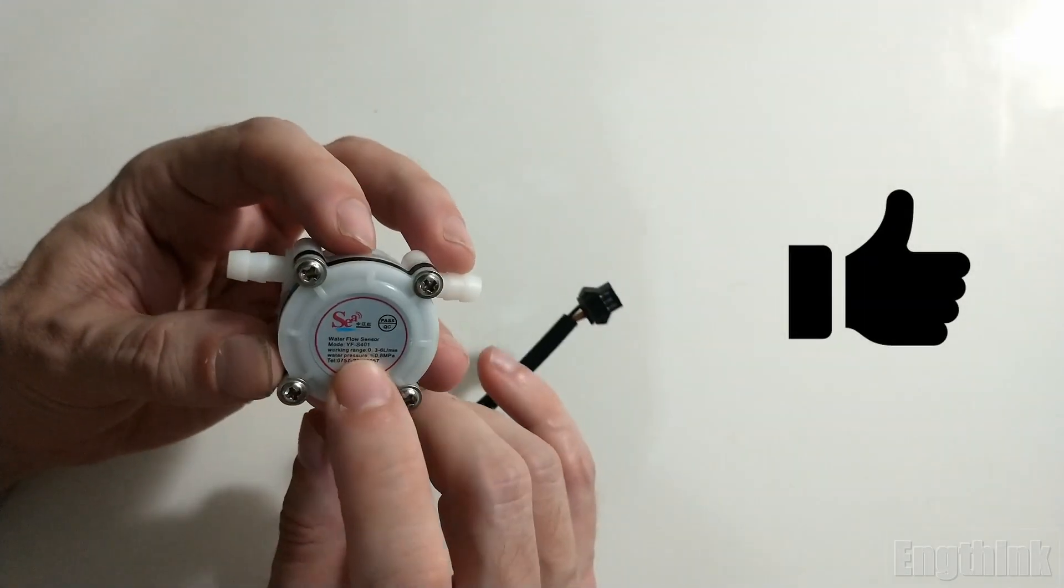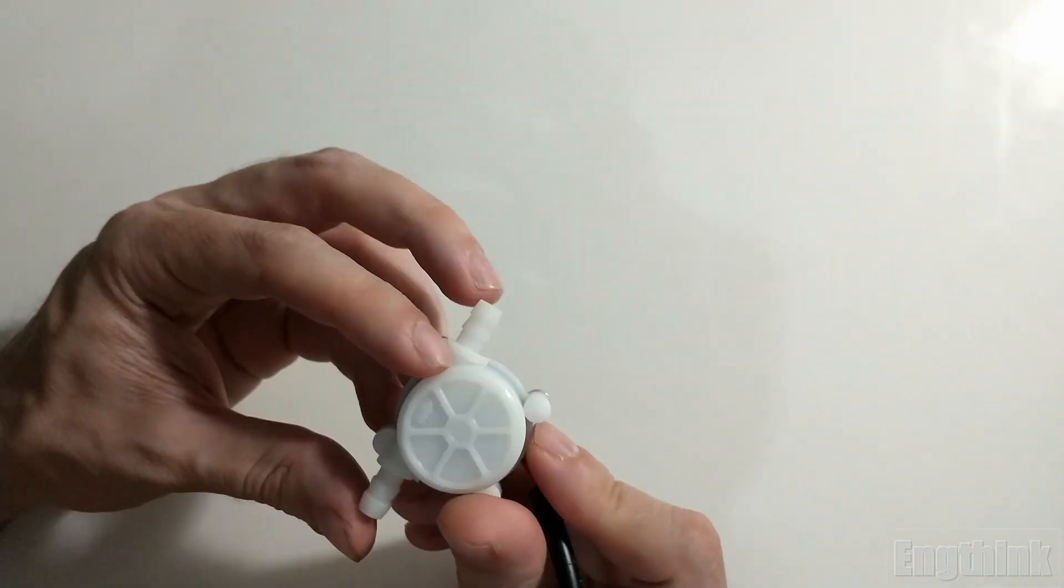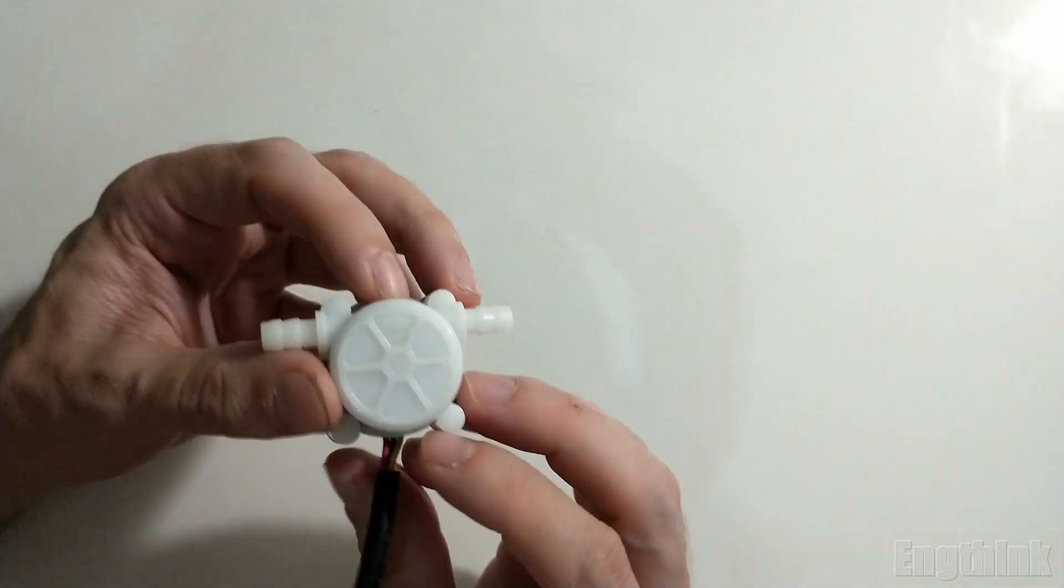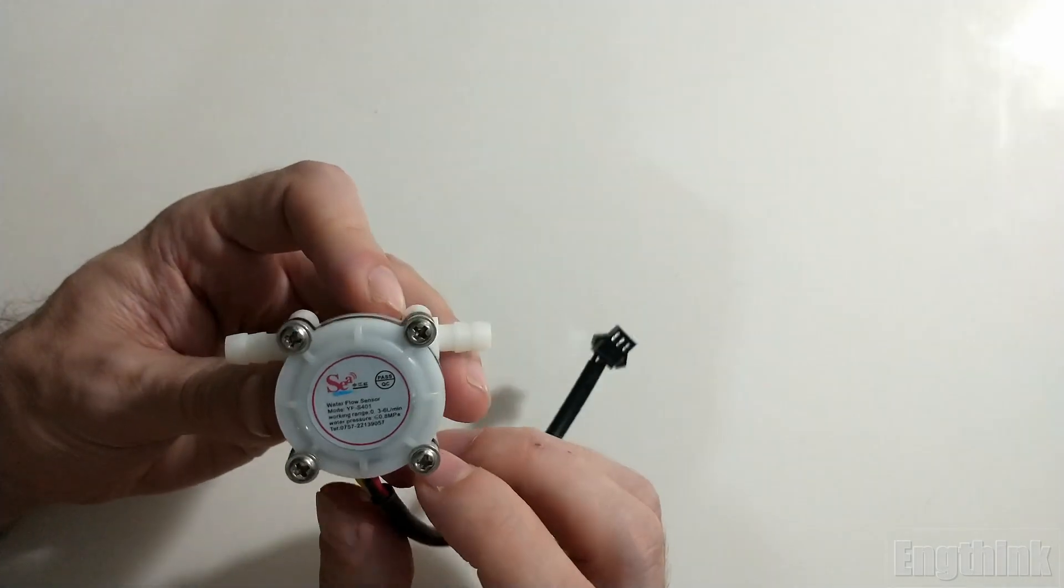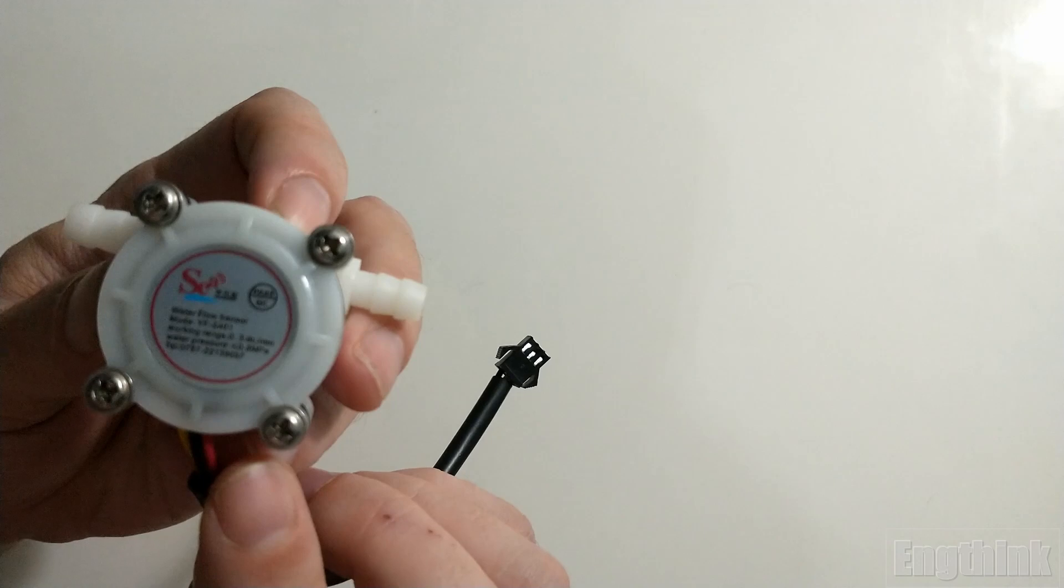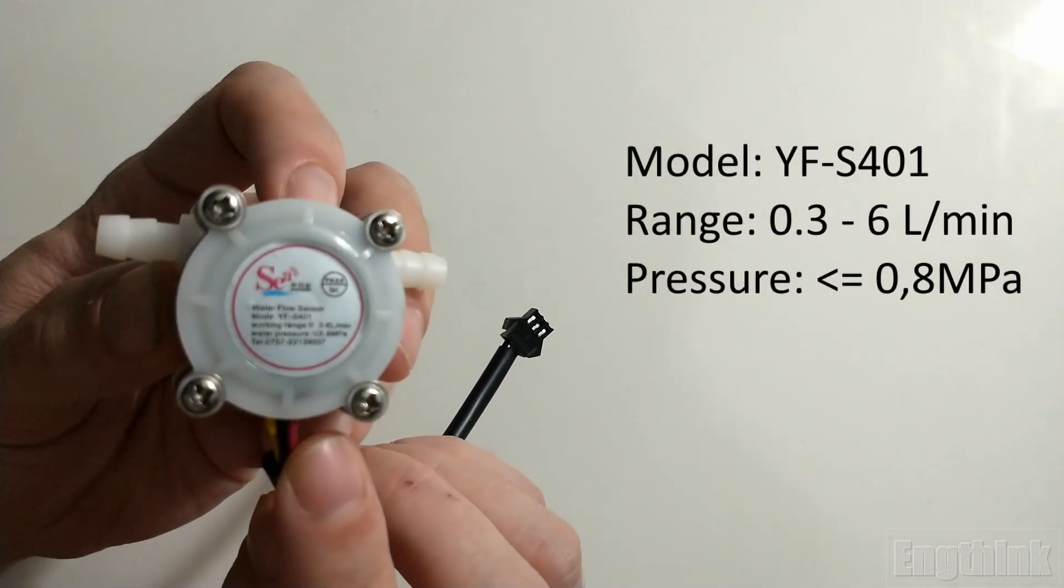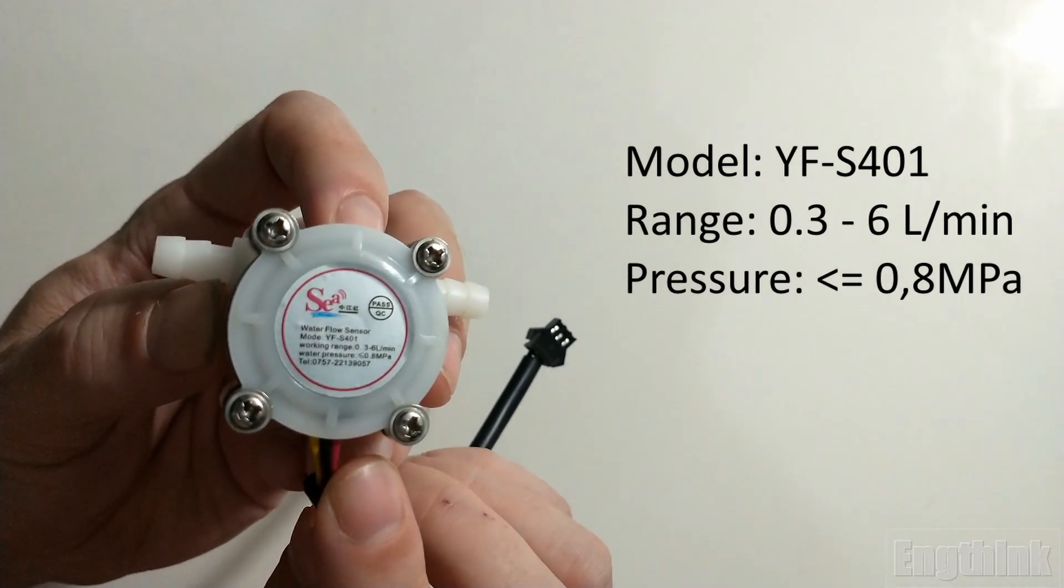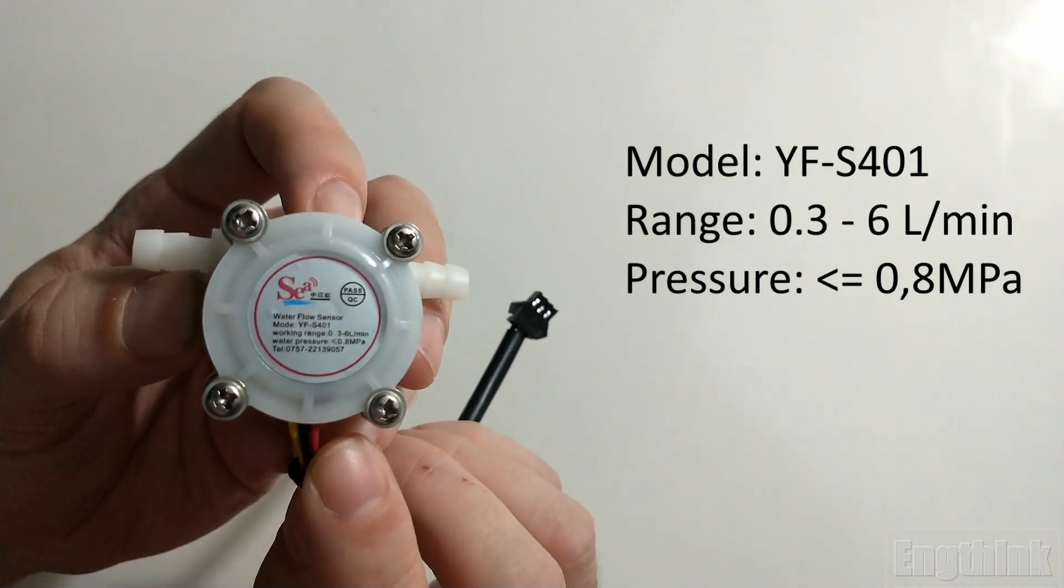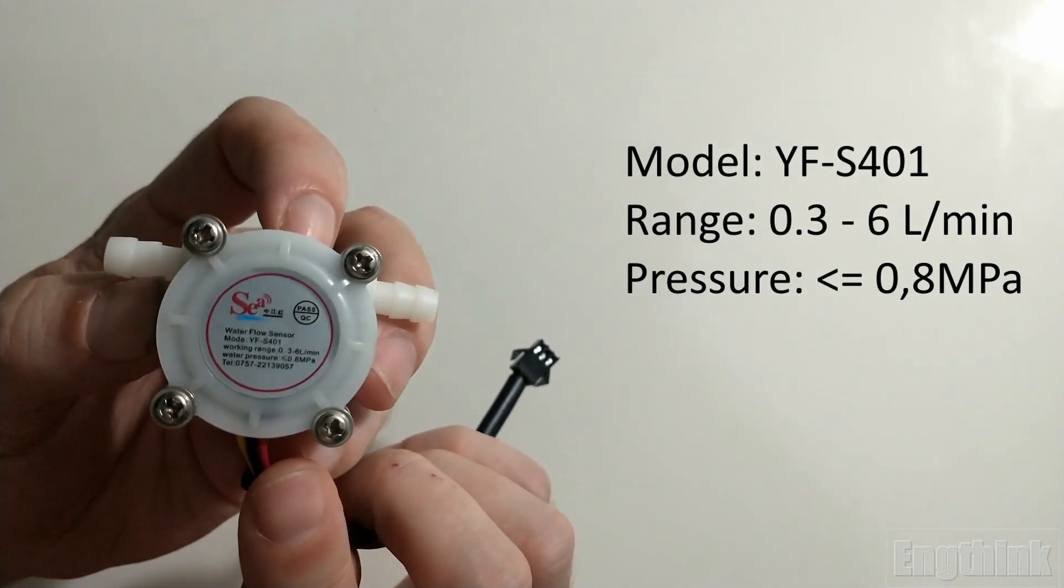Returning to the flow sensors, this one that I'm holding here is the smallest of the three that I presented at the beginning of the video. The first thing you can see is the flow rate, which is around 0.3 to 6 liters per minute.